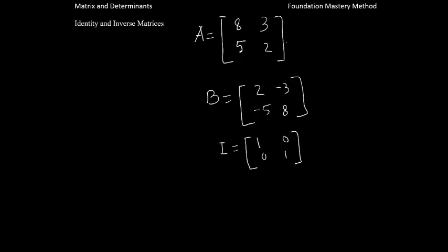Identity and inverse matrices. We are given three matrices. A is a matrix of order 2 by 2, B is a matrix of order 2 by 2, and I is a matrix of order 2 by 2. This matrix I is an identity matrix. A and B are given matrices.